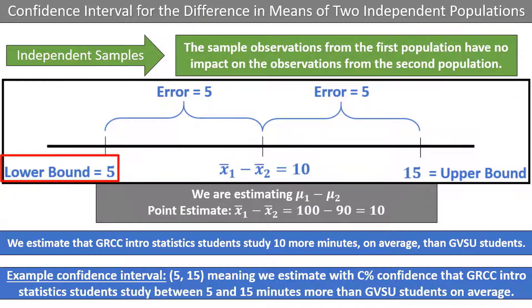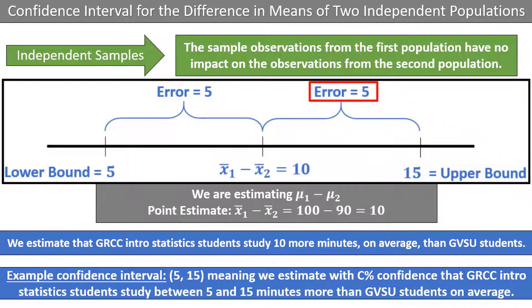The lower bound is 5 and the upper bound is 15. The margin of error is 5, the distance from the point estimate to either of the bounds of the confidence interval. At this point, I haven't shown you how to calculate the confidence interval, but we will look at how to do that very shortly.